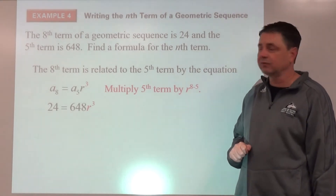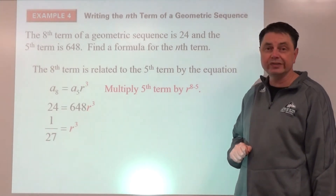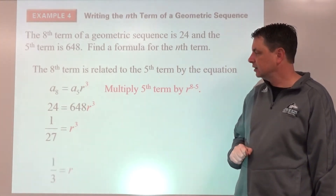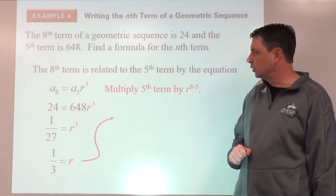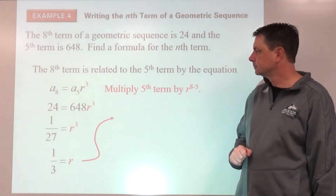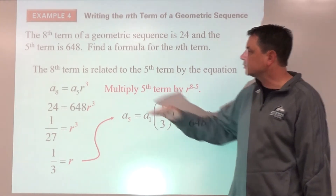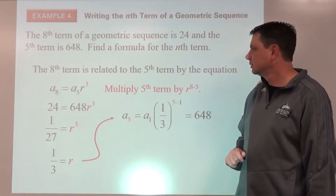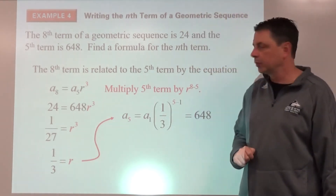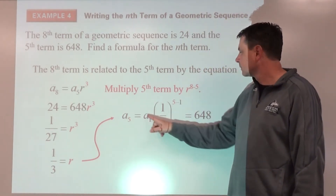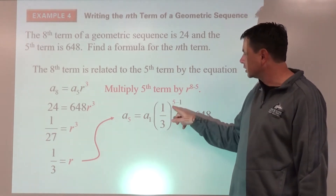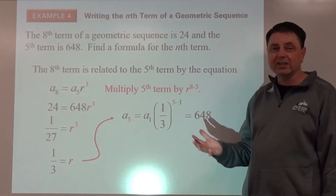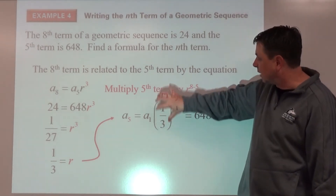Dividing by 648, reducing, then taking the cube root on both sides, we find r equals one third. Substituting into one of the two equations — preferring the one with the lower position — a-sub-1 times r to the 5 minus 1 for the fifth term of 648. We can divide both sides by this number.